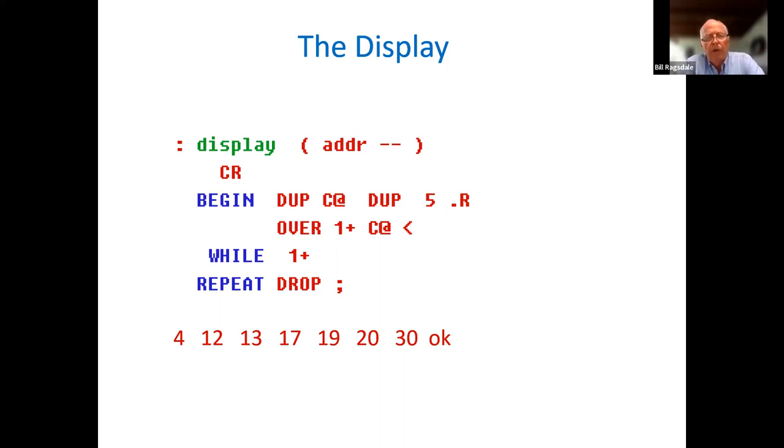BEGIN takes the starting address, C@ fetches its numeric value. The DUP 5 .R displays that integer. And then the OVER 1+ C@ FETCH < does a test to see, is this the end of the substring? If it is not the end, it increments the address by one and repeats. So this will step across the addresses of the substring, displaying each integer value until it sees a declining value, and then it terminates. So we see in this case, we got the longest seven element substring.